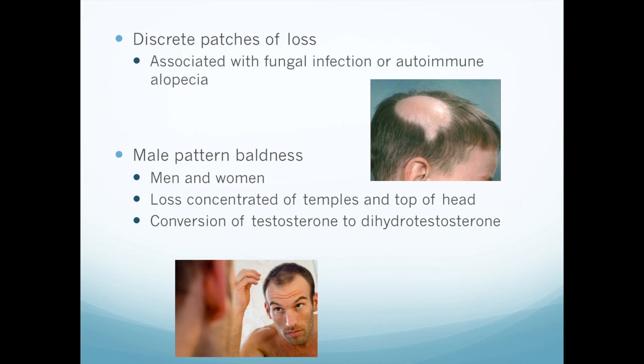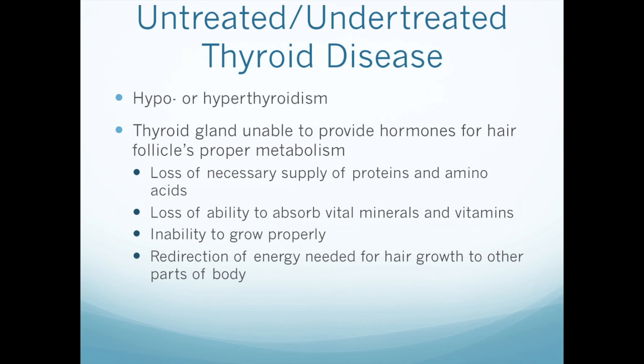There's also male pattern baldness, which is not just in men — it can also be in women. You can see it's more centered on the temples and the top of the head, and this is a hormone issue. What causes the thinning of the hair? One of the most common causes is untreated or undertreated thyroid disease. You can have hair loss in either hypo or hyperthyroidism. Basically, the thyroid gland isn't able to produce the hormones necessary for the hair follicle's proper metabolism, leading to loss of proteins and amino acids, loss of the ability to absorb minerals and vitamins, and energy is directed away from hair growth into other areas of the body.